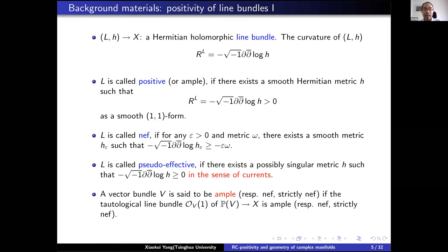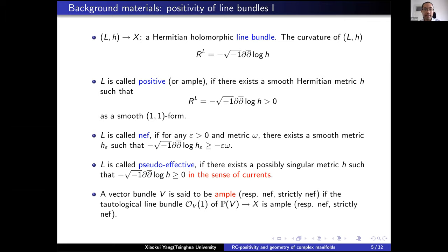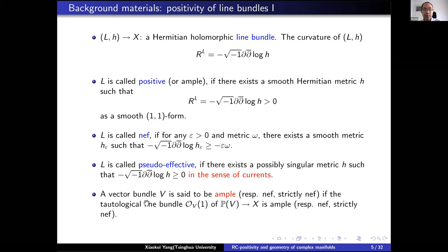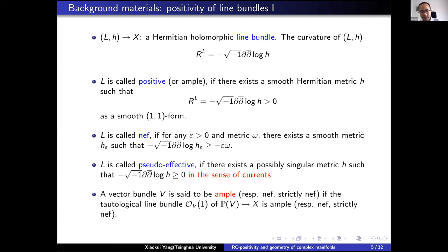We also have curvature notions in analytic geometry. Here X is a compact complex manifold and L is a line bundle. If its curvature is positive as a (1,1)-form, it's called positive or equivalently ample. It's called nef if for any epsilon greater than zero, there exists a Hermitian metric H_epsilon such that its curvature is bounded below and very close to zero. Taking the limit as epsilon goes to zero gives the notion of pseudo-effective, meaning there exists a possibly singular metric whose curvature is positive in the sense of currents. These are all about line bundles. For vector bundles, it is standard to call them ample, positive, nef, strictly nef, and similarly pseudo-effective can be defined via the tautological line bundle.